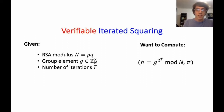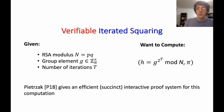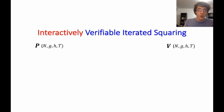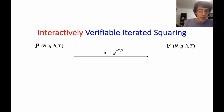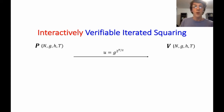Instead of just computing g to the 2^t, we want to compute this answer along with a proof that h is actually g to the 2^t. Pietrzak gave a succinct interactive proof for this computation. Here we have the prover and verifier: the prover runs in time t, and the verifier hopefully runs in time log t. The prover first computes the halfway point of the computation — t/2 iterated squarings of g — and sends this midpoint u to the verifier.